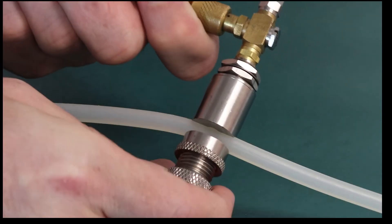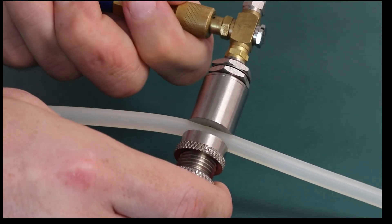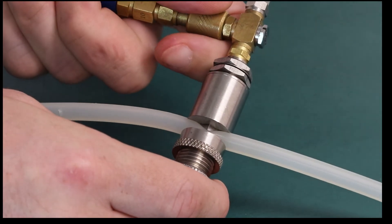Shut-off pressure is a function of the tubing stiffness and the pressure inside the tubing. Be sure not to exceed the pressure limitations of the tubing in the valve.